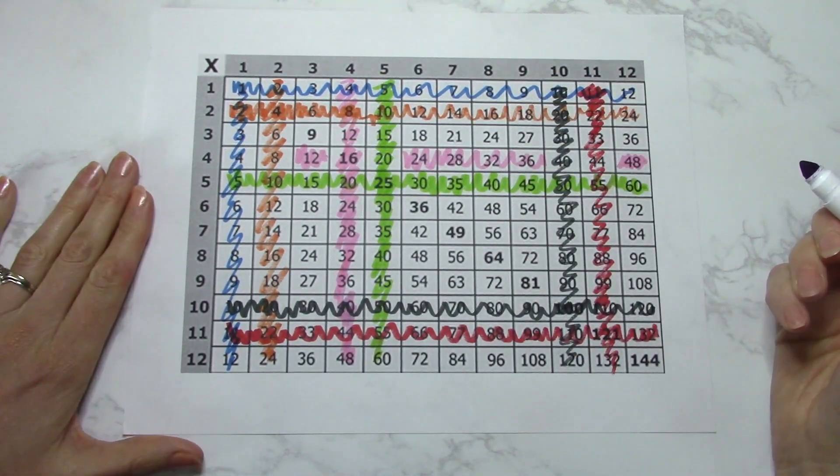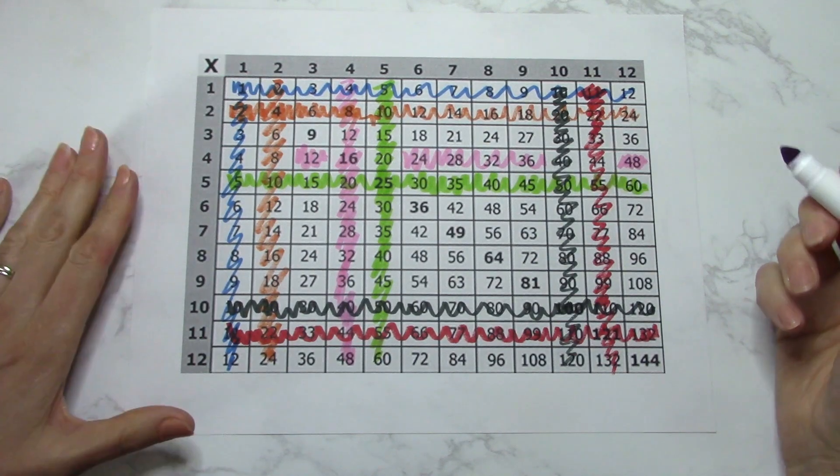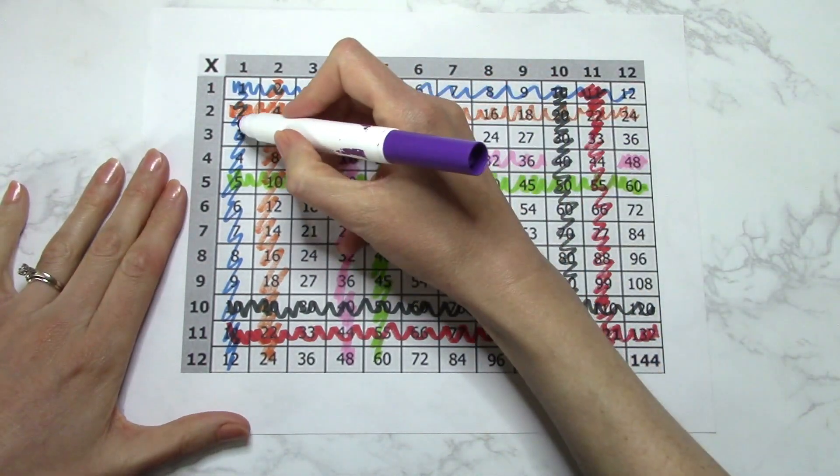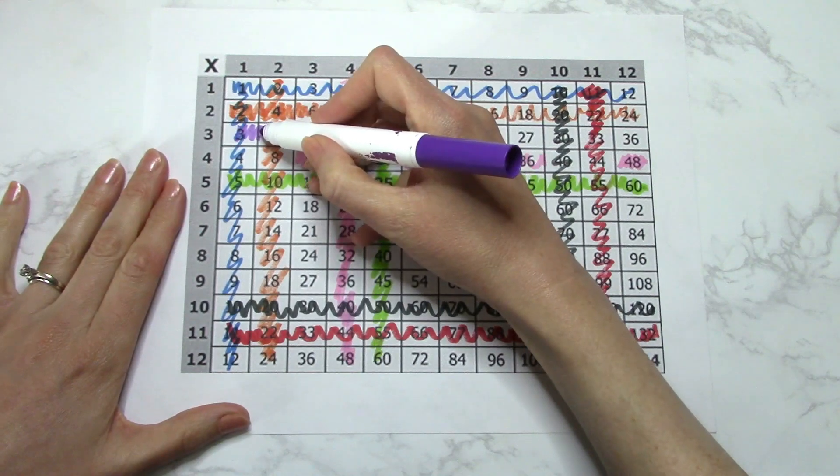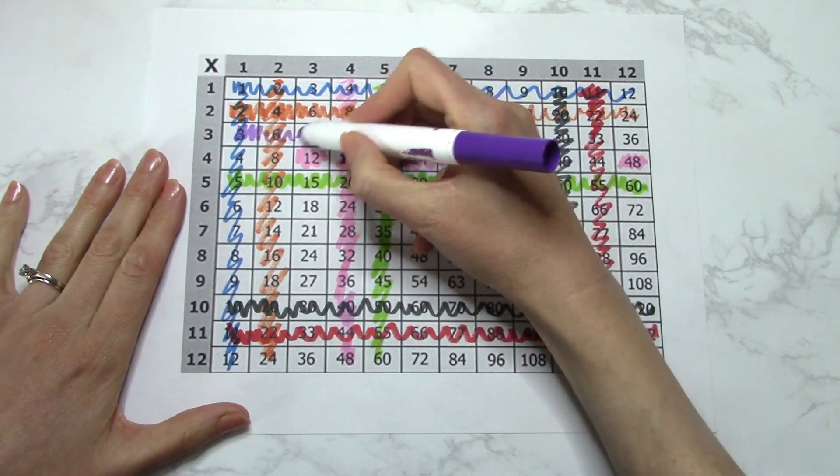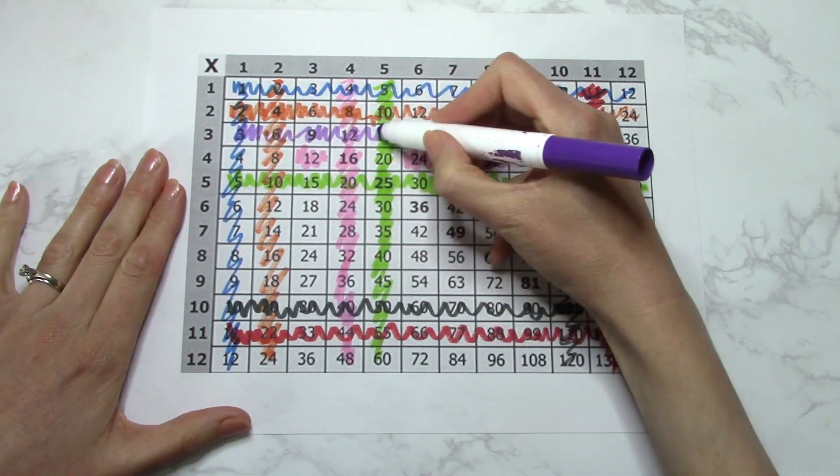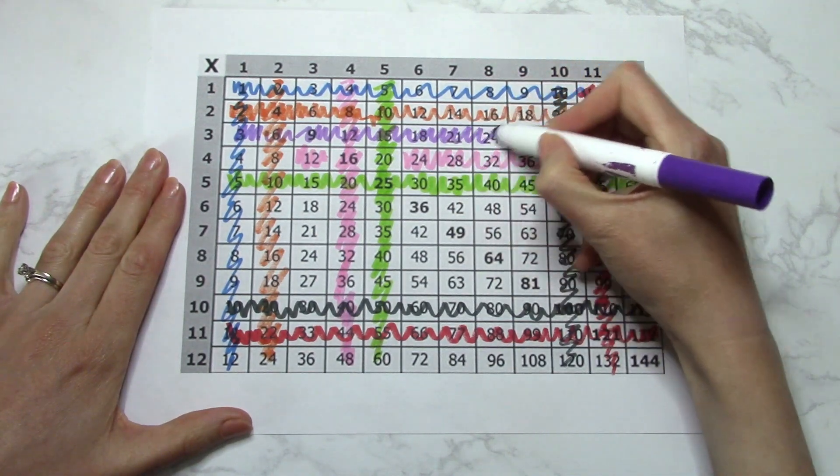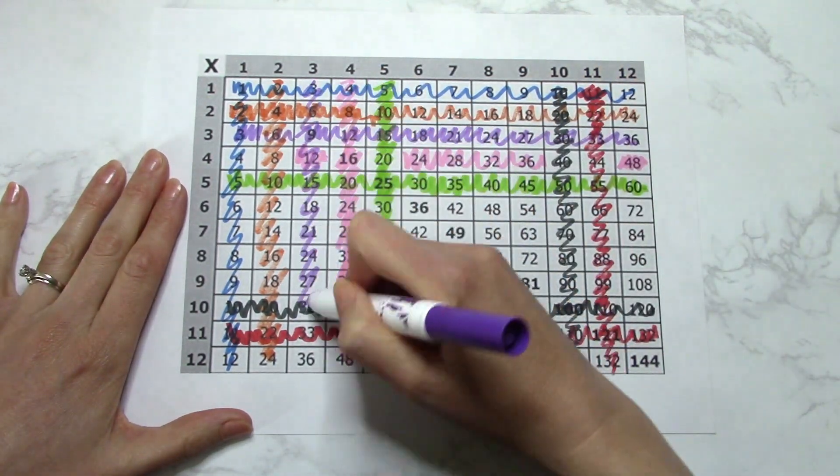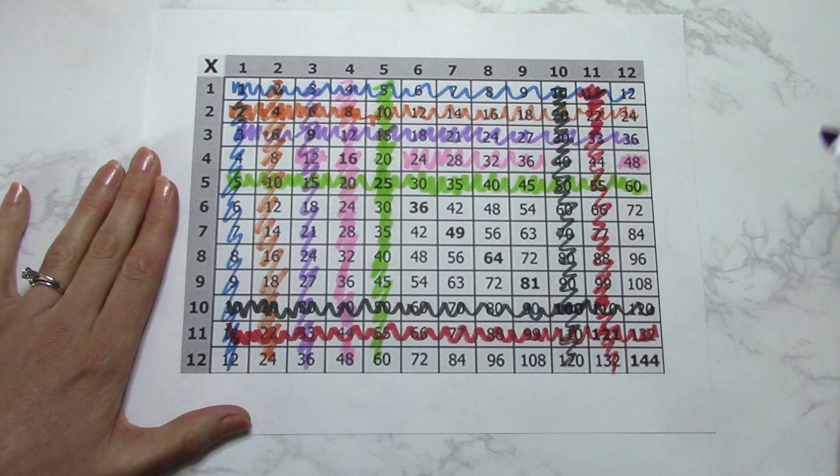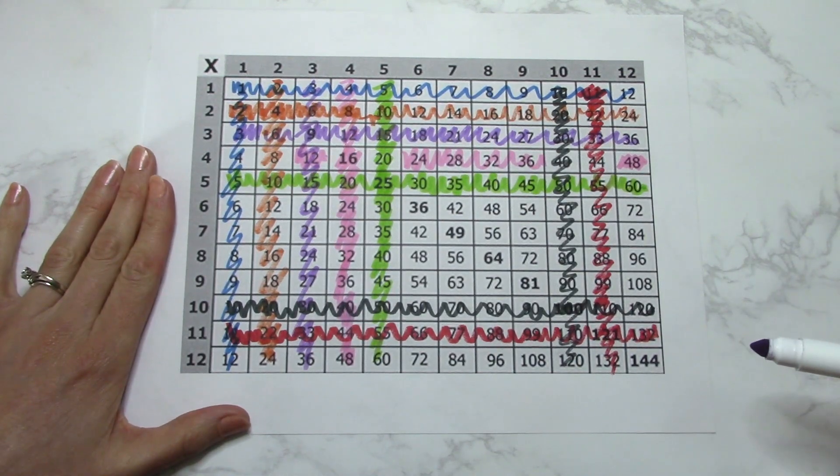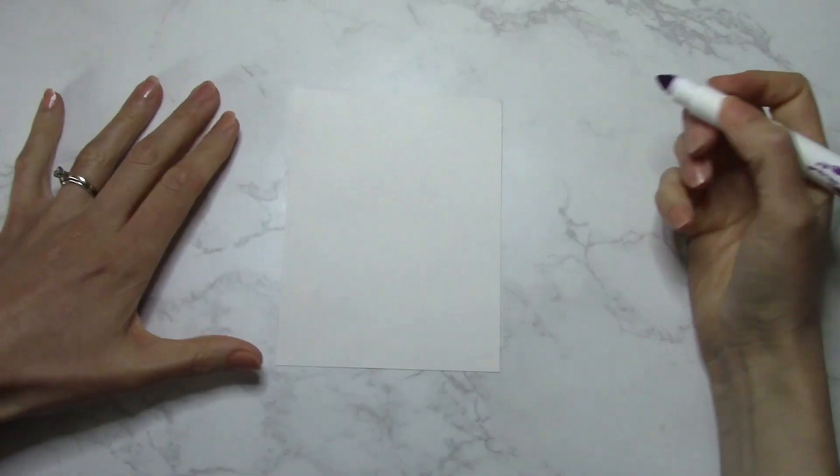Now threes here can be a little bit challenging, but if you can count by threes—3, 6, 9, 12—you can get the hang of it. Look at this, we have covered so much of this board. Now if you'd like to see more videos like this, definitely give it a big thumbs up.